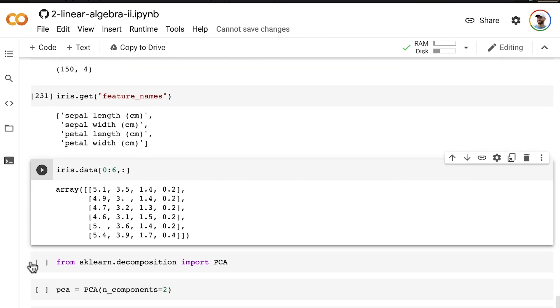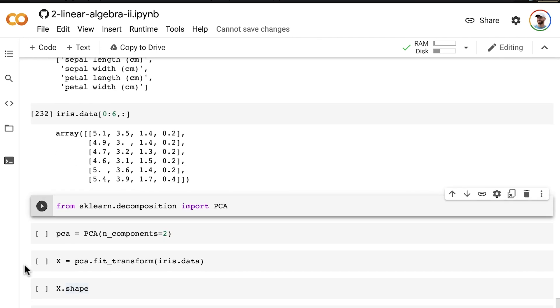All right. So let's now import the PCA method from the scikit-learn decomposition module. And we're going to specify here that we want to return two principal components.